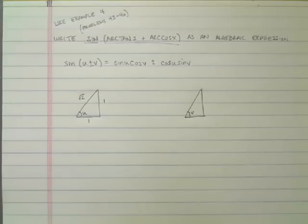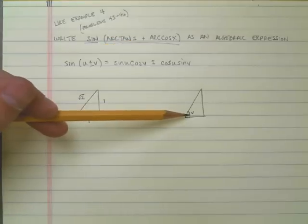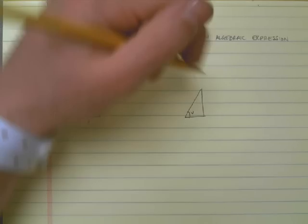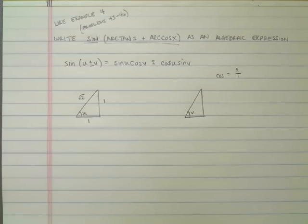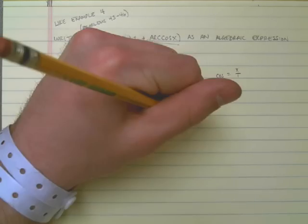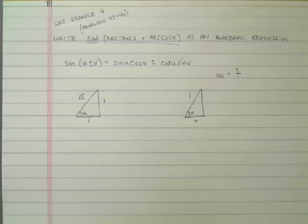The other thing that I'm going to do is I'm going to call arccos(x), I'm going to associate that with v. And I know v has a cosine of x. That means that if the cosine is x over 1, the adjacent side must be x and the hypotenuse must be 1.